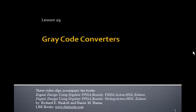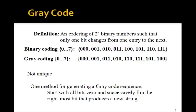This is lesson 29 on gray code converters. A gray code is an ordering of 2 to the n binary numbers such that only one bit changes from one entry to the next.